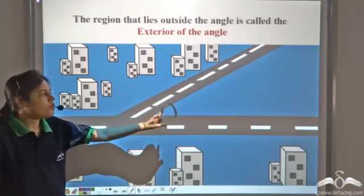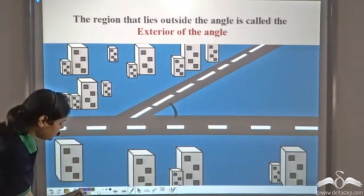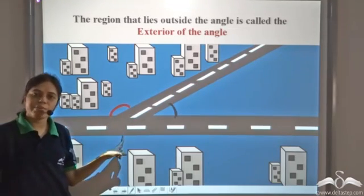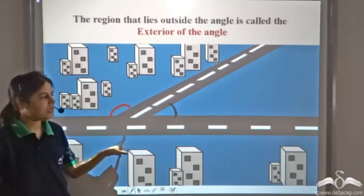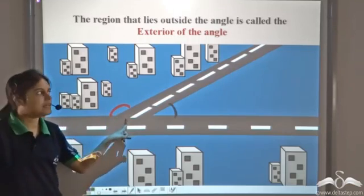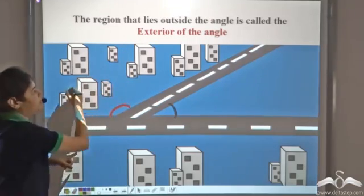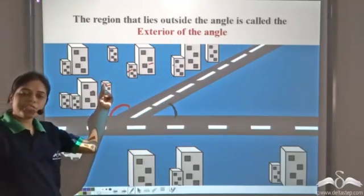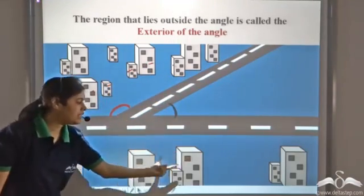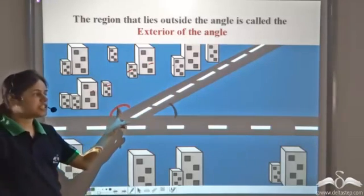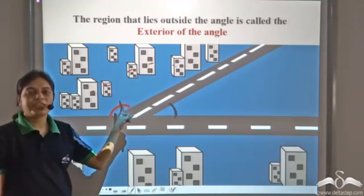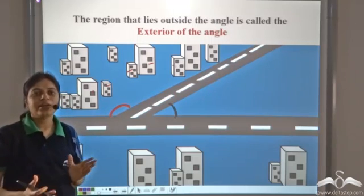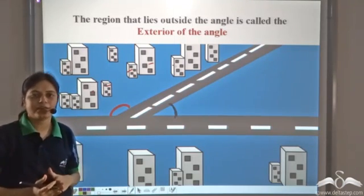If we consider these two roads forming this angle, then all these buildings lie in the exterior of this angle. But if we consider the other angle, then these buildings are in the interior of that angle, and only those other buildings are in the exterior. So exterior and interior are specific to an angle — it varies depending on which angle you consider.